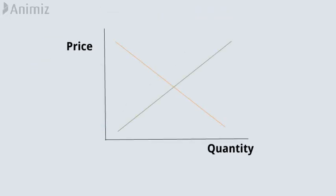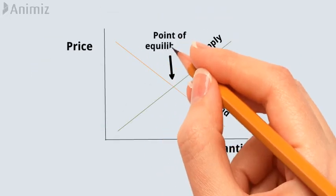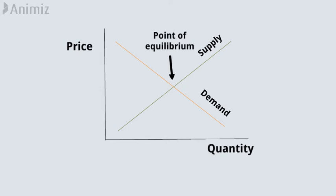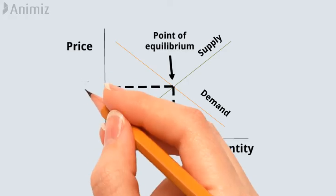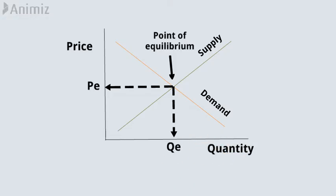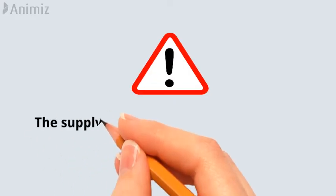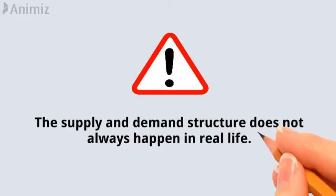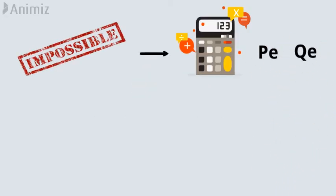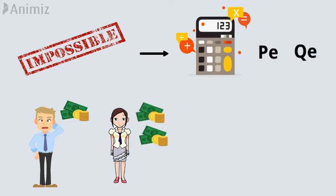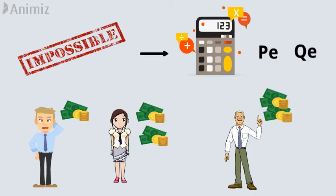By combining the two graphs, we can observe the point of equilibrium where the supply and demand lines intersect. Tracing lines directly from the equilibrium point to the X and Y axes will reveal the price at equilibrium (PE) and quantity at equilibrium (QE), respectively. It is crucial to note that the supply and demand structure does not always happen in real life, as it is impossible to calculate PE and QE in real life since every individual buyer shows a different willingness to pay for goods, and every seller shows a different willingness to accept prices.